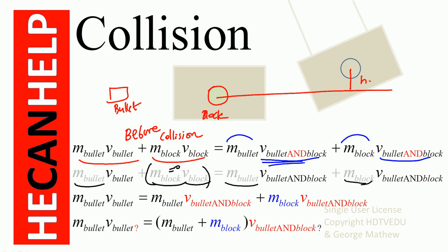There is a common factor: the speed of the bullet and block after collision. Taking that common factor out, we get: mass of the bullet times speed of the bullet before collision equals mass of the bullet plus mass of the block, times speed of bullet-and-block after collision. We still don't know either speed, so we need additional information.